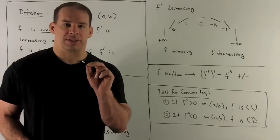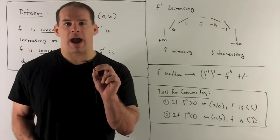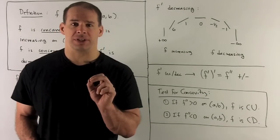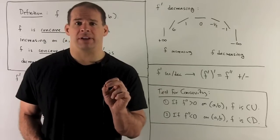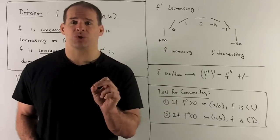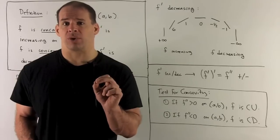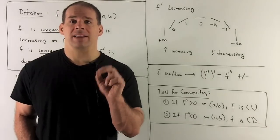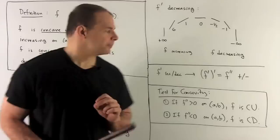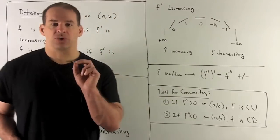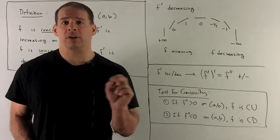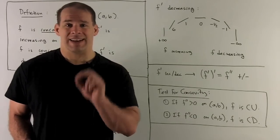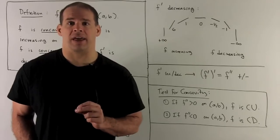Let's think about what's actually happening when we say f prime is increasing or decreasing. How do you tell increasing or decreasing for a function? You take its derivative. Here we're taking f prime and taking its derivative — that's just the definition of the second derivative. So concave up and concave down are going to be controlled by the second derivative. If the second derivative of f is positive on an interval, it's concave up; if negative, it's concave down.